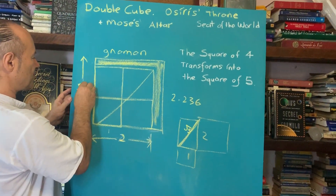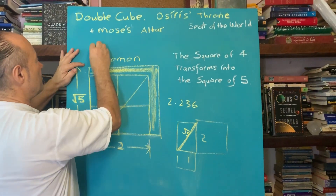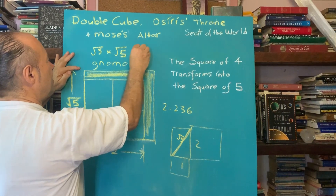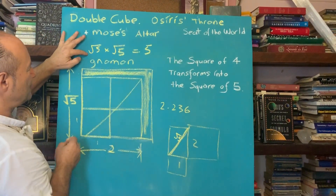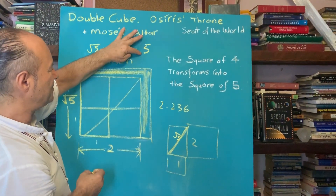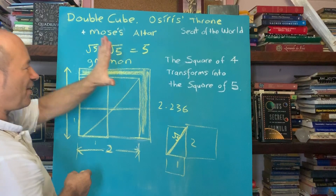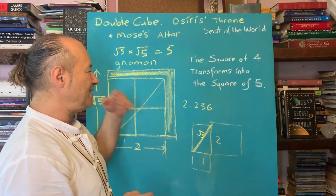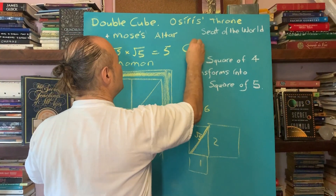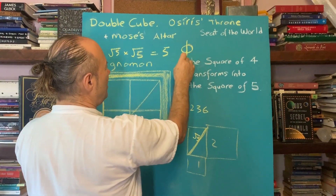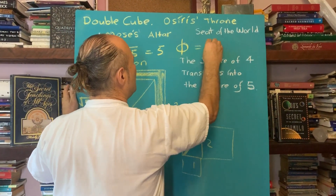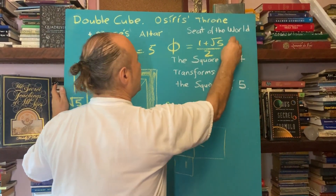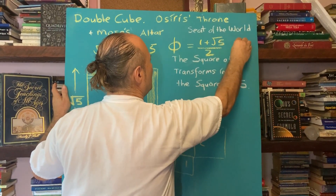If the side of the square is root five, we know that root five times root five equals five, because 2.236 times itself gives us five. Five has to do with five fingers and the five-pointed star — five is the key to the golden ratio. By knowing root five, we know that the golden ratio is one plus the root of five, divided by two.